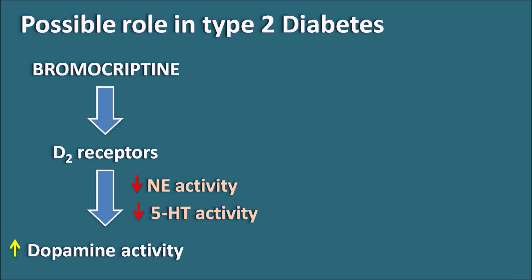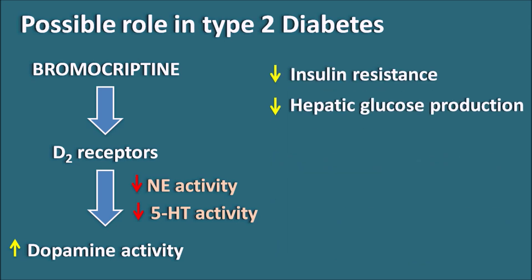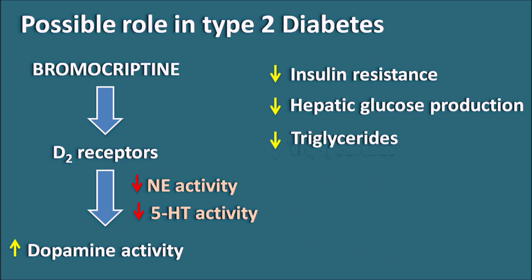When Bromocriptine is given in type 2 diabetes, it decreases insulin resistance, decreases hepatic glucose production, and decreases triglycerides as well as free fatty acid production. By all of these mechanisms, glucose levels can be controlled using Bromocriptine.